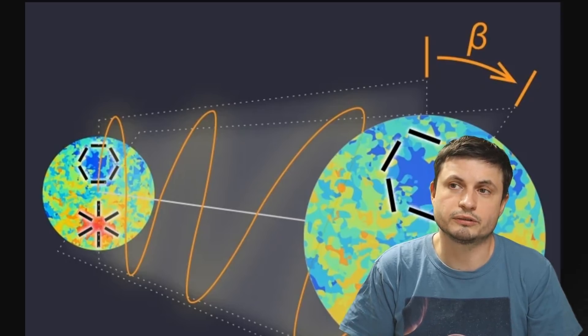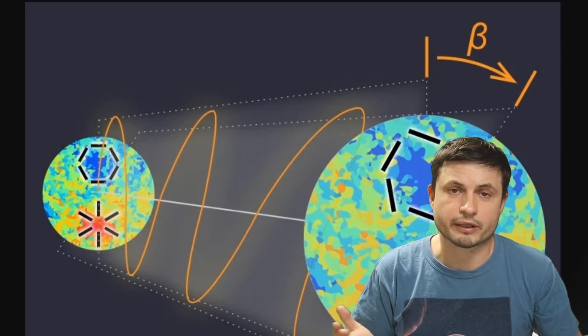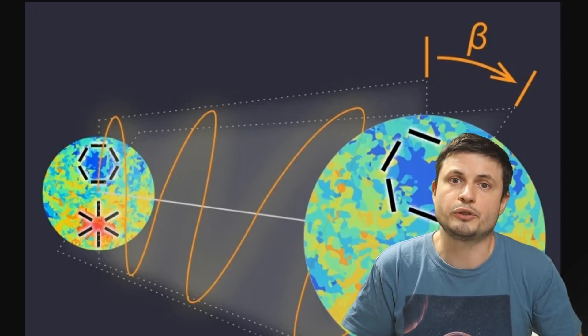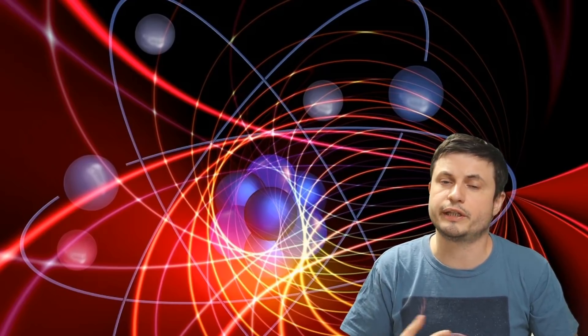And that something could be, well, it could be dark matter, maybe dark energy, or it could be the universe itself. In other words, one of the implications in this study is that, just like the weak force, maybe the universe also has a preference for one side over the other.